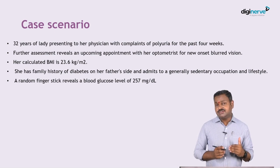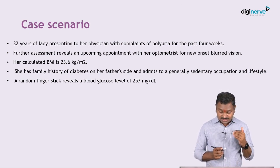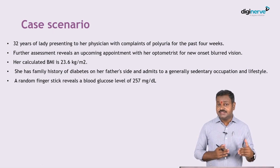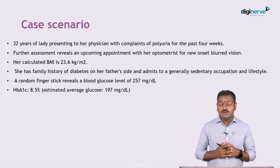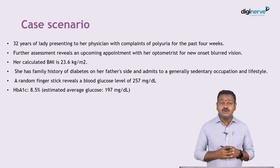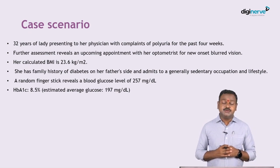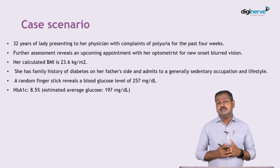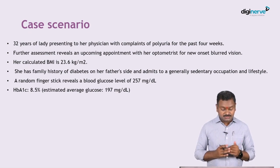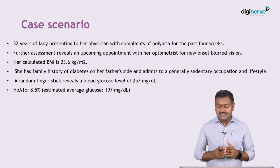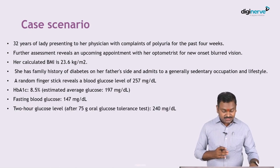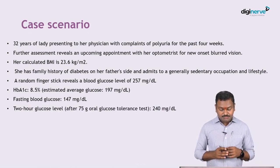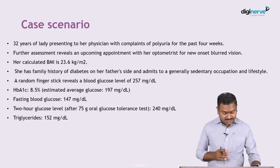This patient has symptoms suggestive of diabetes mellitus as well as a high blood sugar, so she requires evaluation to confirm the diagnosis. The HbA1c or glycosylated hemoglobin was 8.5%, which is elevated — normally 6.4% and below is normal. The fasting blood sugar is 147, the two-hour postprandial blood sugar is 240 milligrams per deciliter.